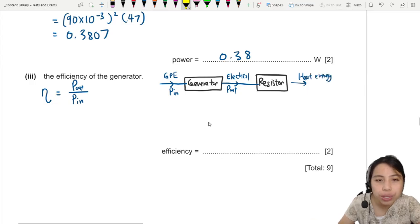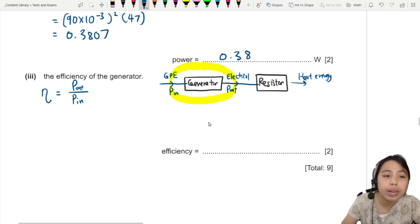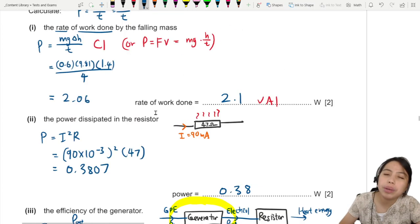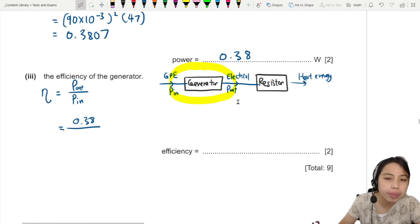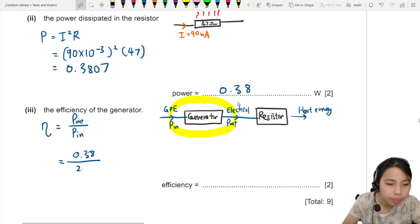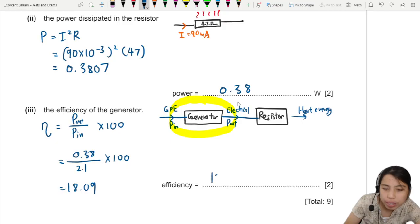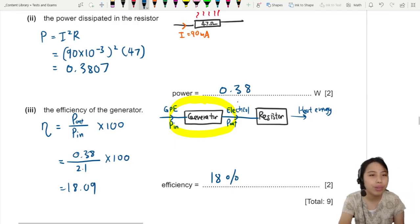So we want to see the efficiency of this part right here, highlighted. So we're going to use what comes out, which is electrical energy, 0.38, over power in, which is the GPE we just calculated just now, 2.1. And this one we can do percentage, so times 100, times 100. We should get about 18.09 or 18 percent. Please write your percent because they never give you the units.